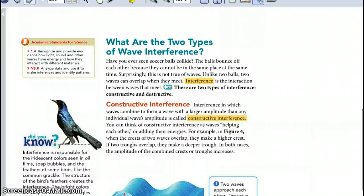Constructive interference. Interference in which waves combine to form a wave with a larger amplitude than any individual wave amplitude is called constructive interference. You can think of constructive interference as waves helping each other or adding their energies. For example, in figure 4, when the crests of two waves overlap, they make a higher crest. If two troughs overlap, they make a deeper trough. In both cases, the amplitude of the combined crests and troughs increase.